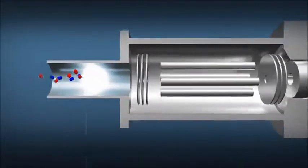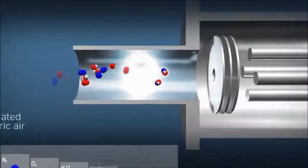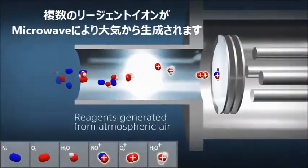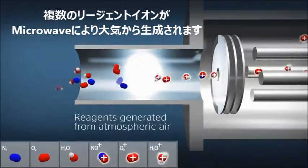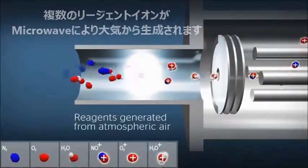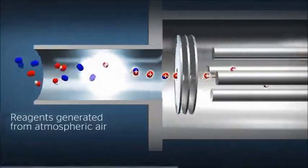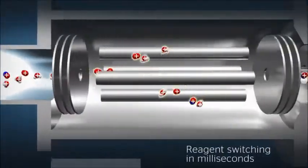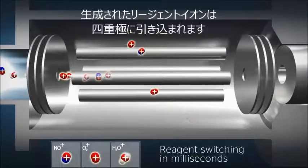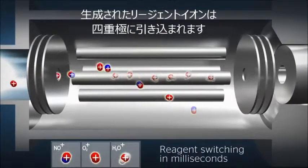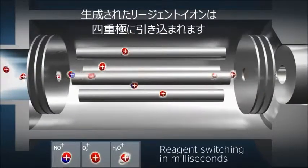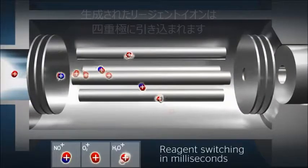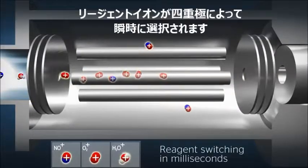Air and water vapor pass through a microwave discharge to produce multiple reagent ions. These reagent ions are focused into a quadrupole mass filter. Inside the quadrupole, reagent ions are filtered by their mass-to-charge ratio.